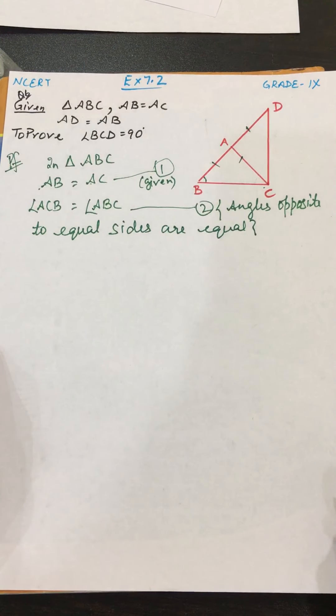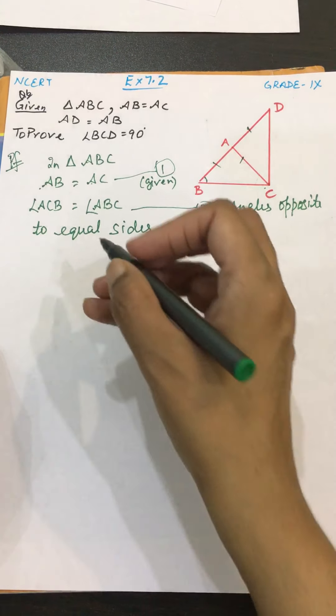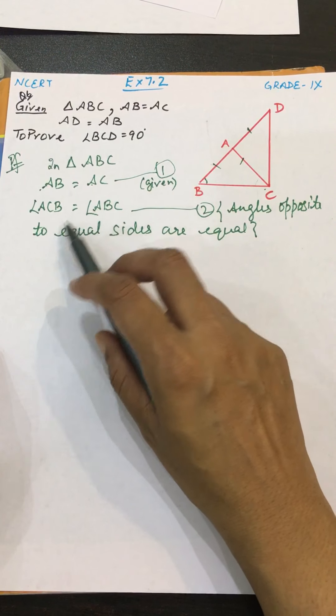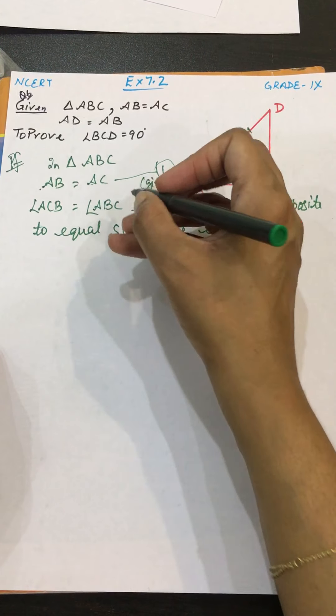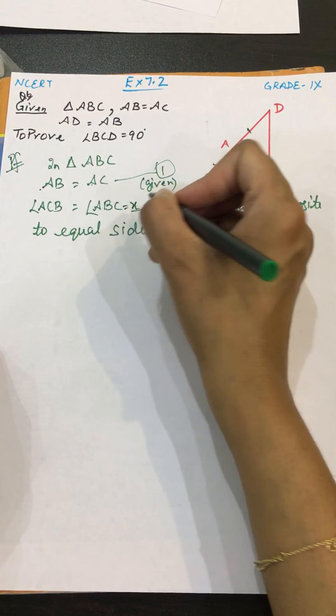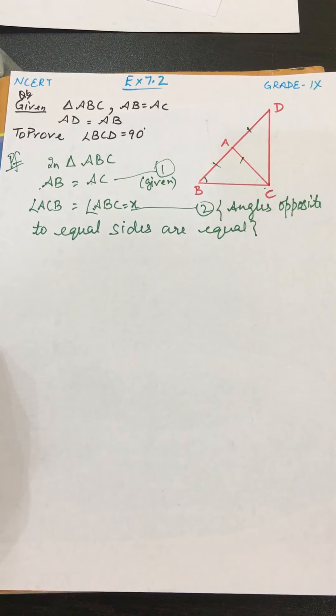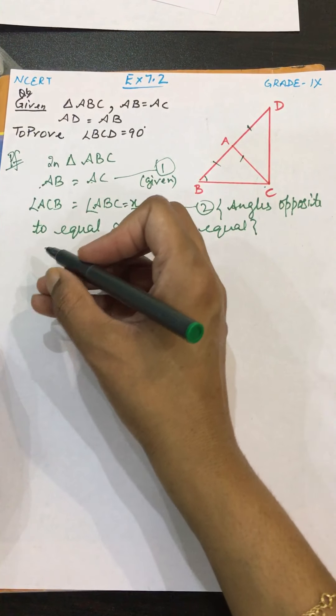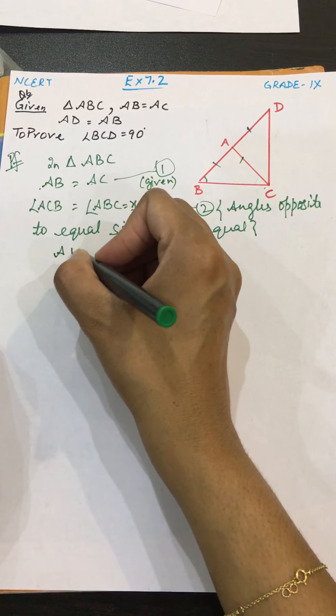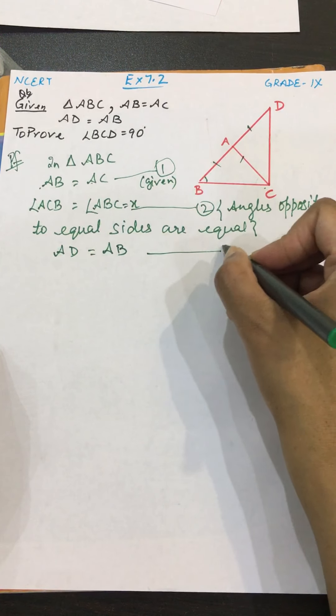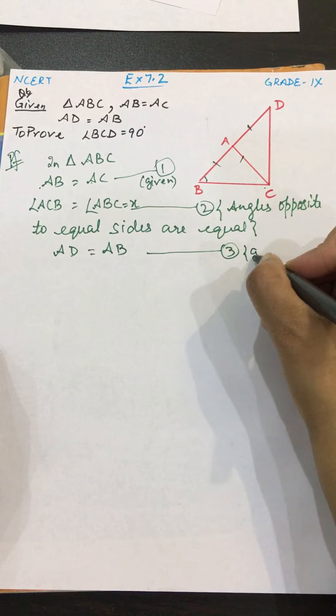After that, here you can assume these two angles are equal, then I can write down x also, that will make it easy. Now I can write down AD equals AB. Mark as third equation, given.